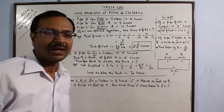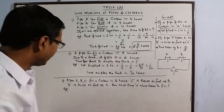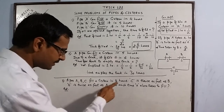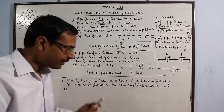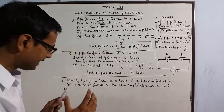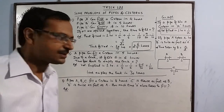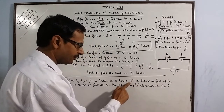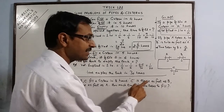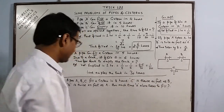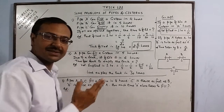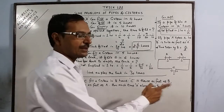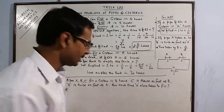Now a third type of problem: three pipes together can fill a system in eight hours. We are given comparative timings — C is thrice as fast as B, and B is twice as fast as A. We need to find how much time pipe A alone takes to fill the system.